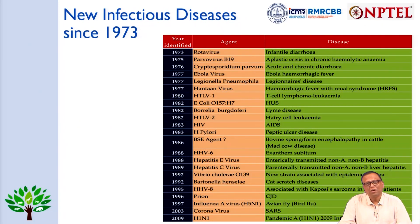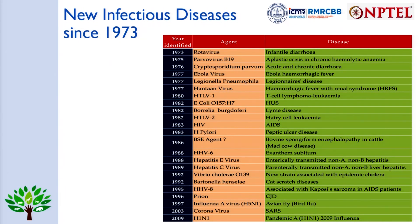This list shows a number of diseases and the emergence and reemergence of various infections since 1973. We start with rotavirus emergence in 1973, then the Ebola virus in 1977, the Hantavirus again in 1977, and a list of several different diseases that have emerged in the last few decades since 1973.